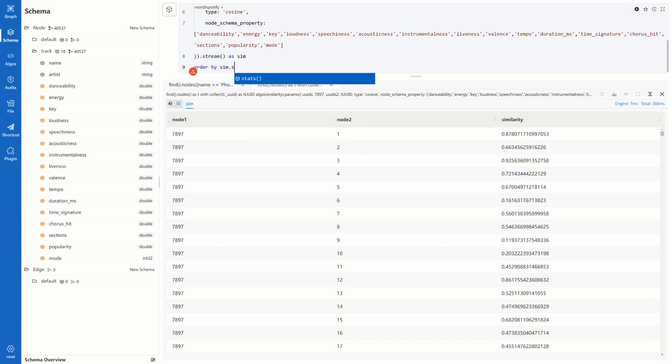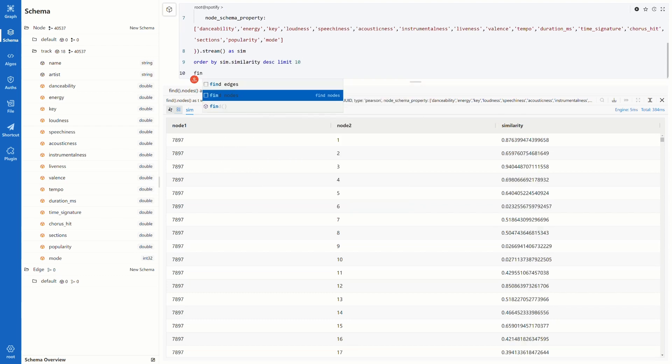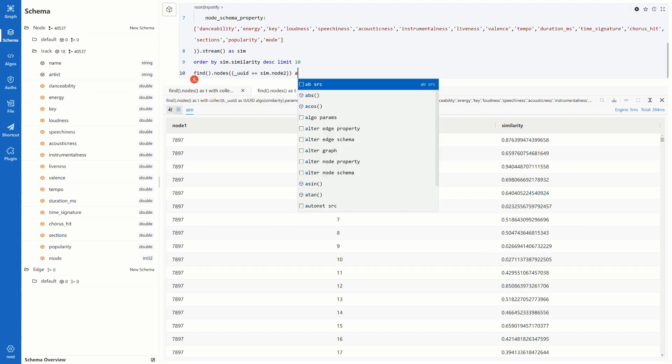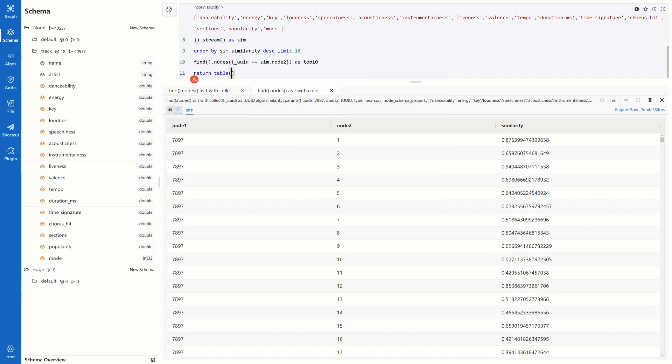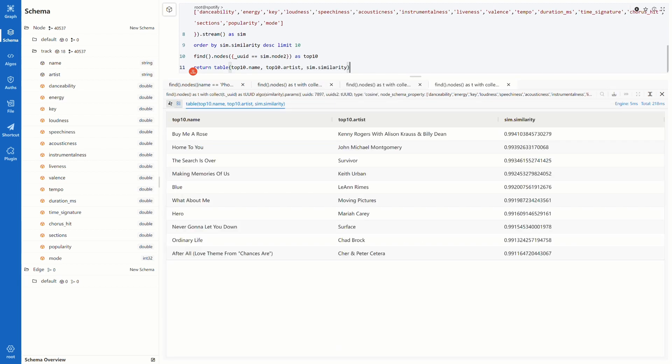Now let's get the name and artist of the top 10 similar tracks. Order the similarity score from high to low and keep the top 10. Then find nodes whose UUID equals to node 2, and return the name, artist, and similarity. The result is very clear now. If you're interested, you may listen to these songs, and see if you agree with these recommendations.